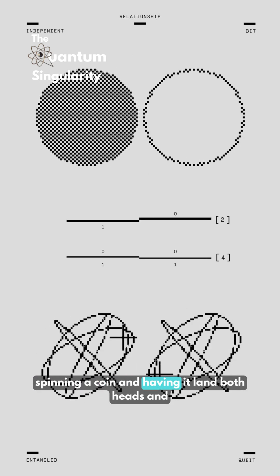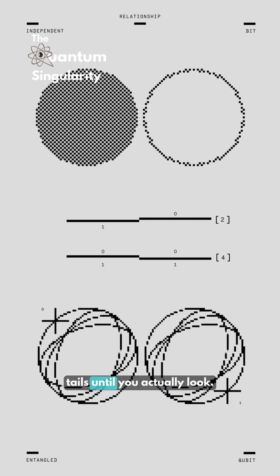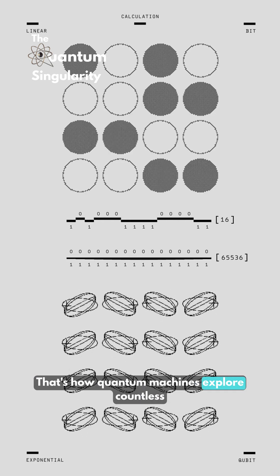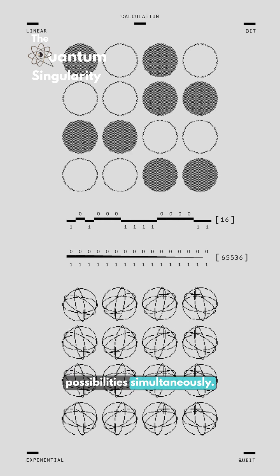Picture spinning a coin and having it land both heads and tails until you actually look. That's how quantum machines explore countless possibilities simultaneously.